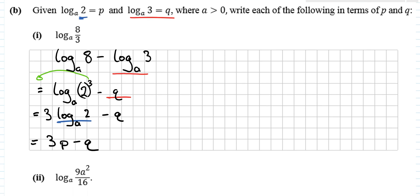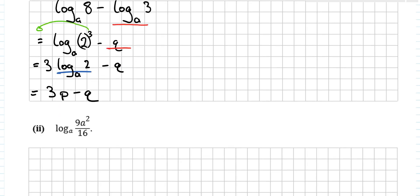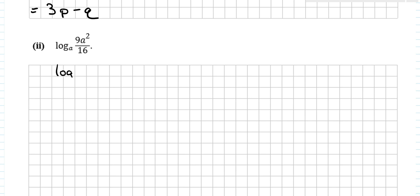Written in terms of p and q. The next one is very similar. Write it in terms of p and q. So again, the first rule that I'm going to use is to break it apart. Log base a of 9a² minus log base a of 16. And I want them to be log base a of 3 equals q, log base a of 2 equals p. So I want to have a 2 or a 3 in here. This one is jumping out at me.